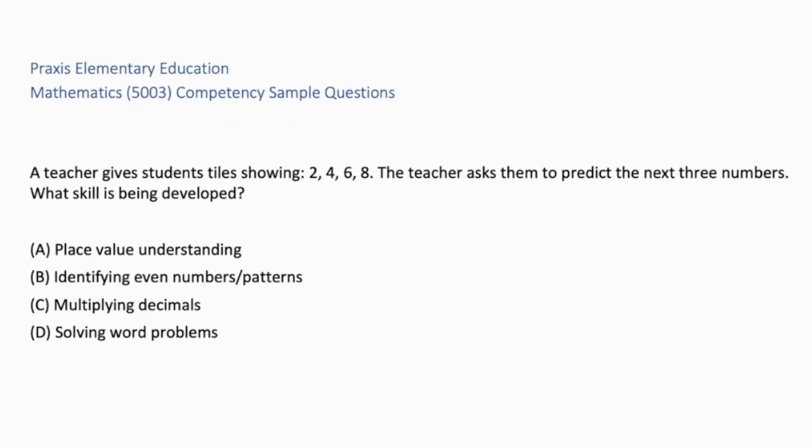A teacher gives students tiles showing 2, 4, 6, 8. The teacher asks them to predict the next three numbers. What skill is being developed? A, place value understanding. B, identifying even numbers or patterns. C, multiplying decimals. Or D, solving word problems. A is incorrect because they are not mastering place value. C is overcomplicating the problem. D is not relevant to word problems. The correct answer is B, identifying even numbers or patterns. Students have to recognize that the rule is add 2 to each number.